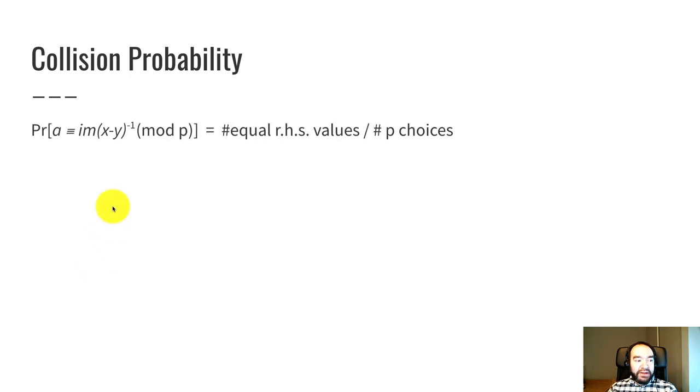And so the probability that A is equal, that the left-hand side is equal mod P, is equal to the number of right-hand side values over the number of choices for A.